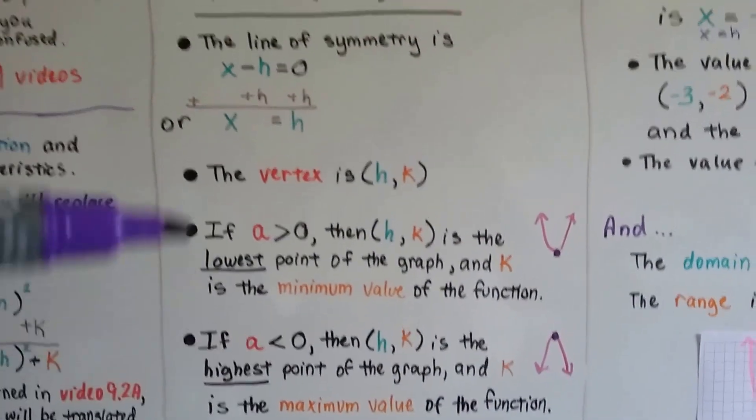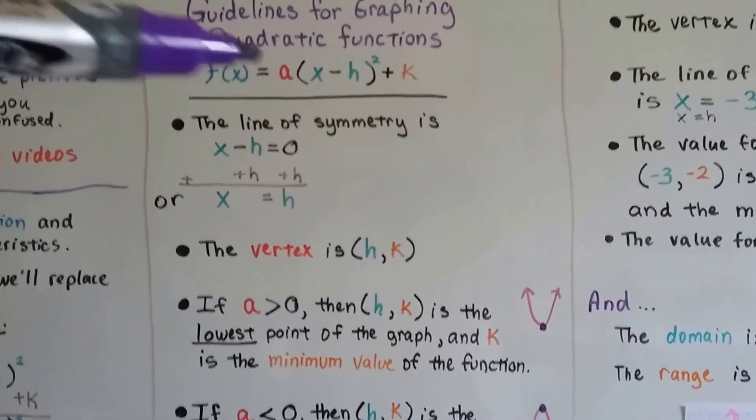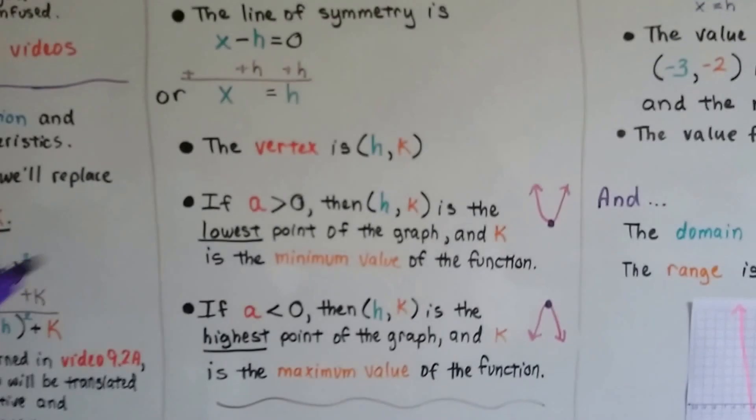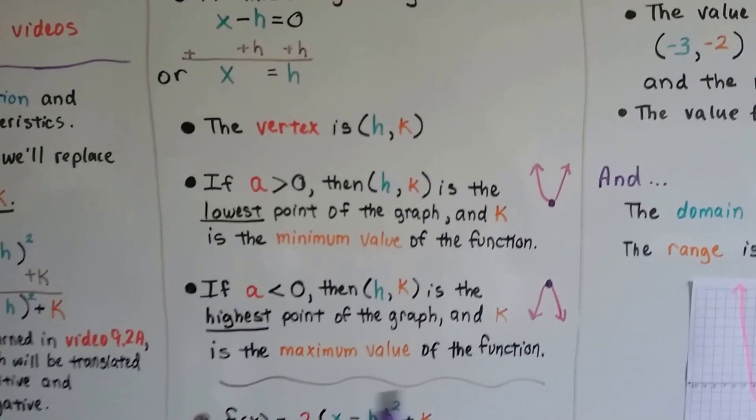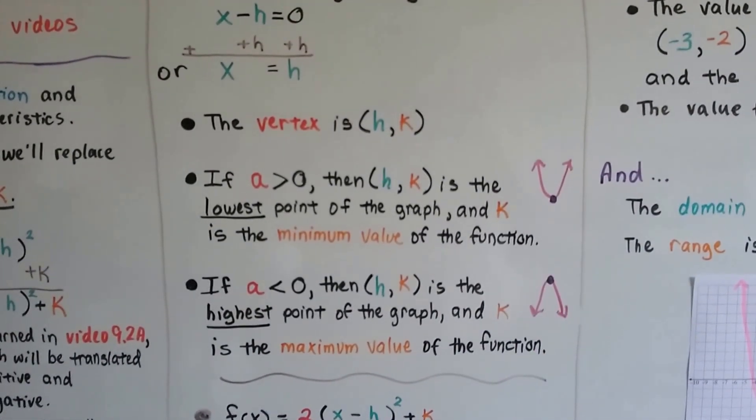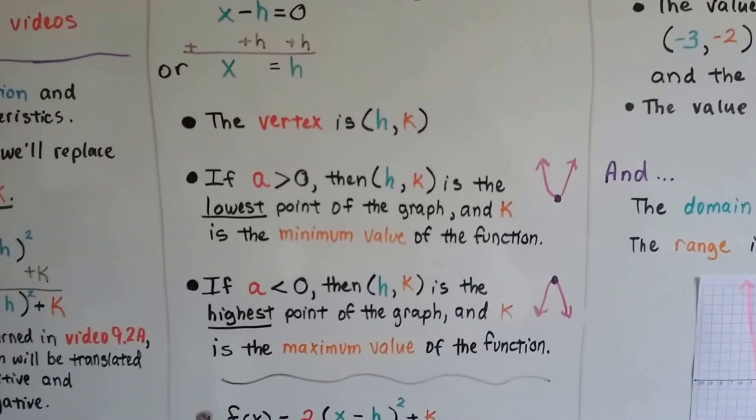And if a, this a value is less than zero, then that point (h, k) is the highest point of the graph, and k is the maximum value of the function.